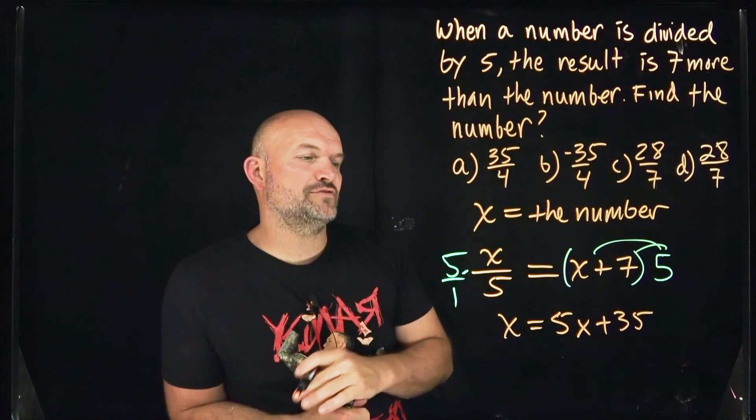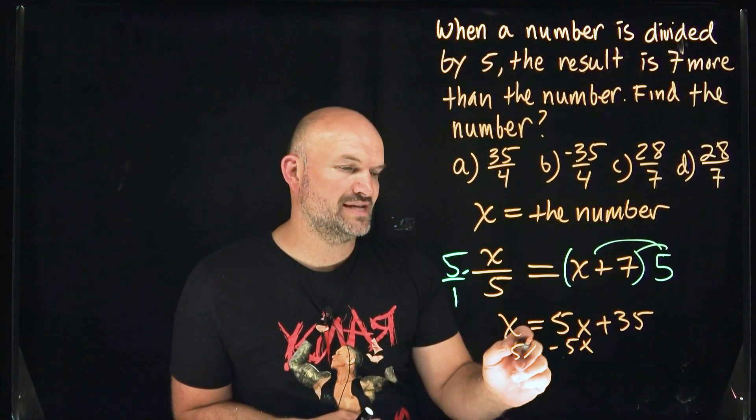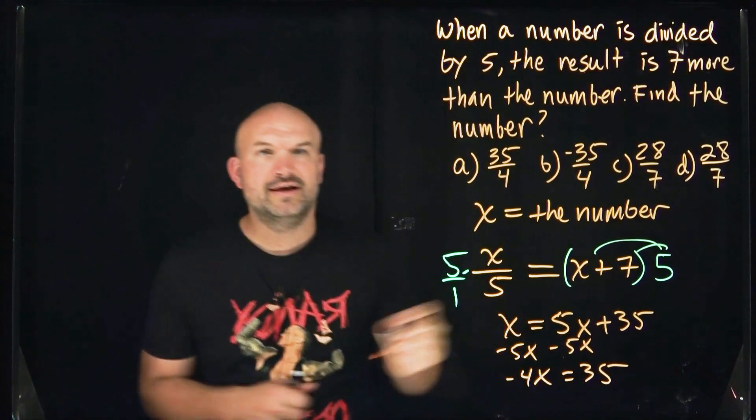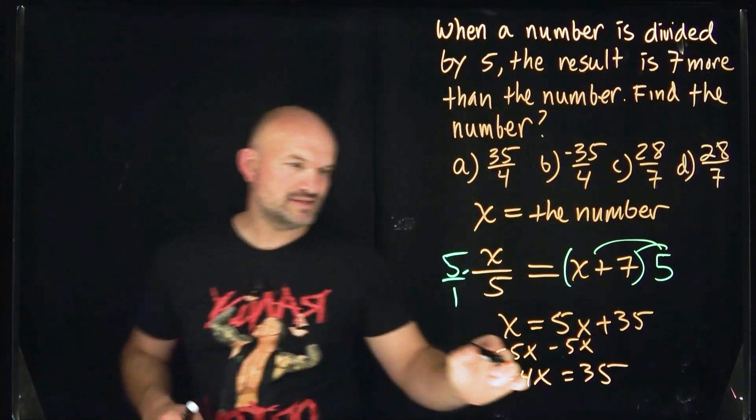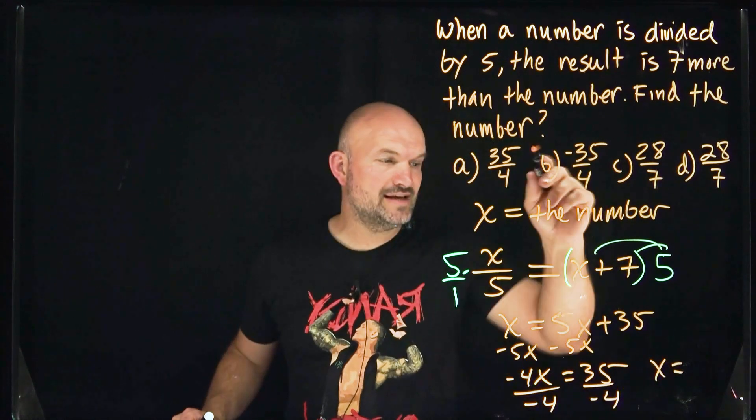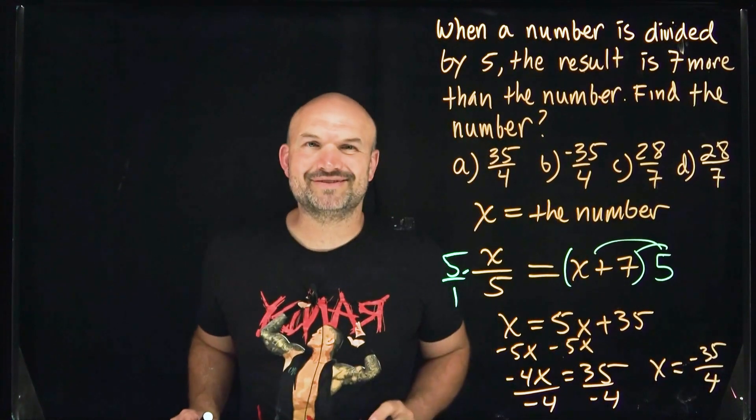Now it's a lot easier for me to get my X's over to the same side. So I'll subtract 5x on both sides. And therefore I get negative 4x equals 35. And now I can simply divide by negative four on both sides. And X is going to give me negative 35 over four, which is answer B.